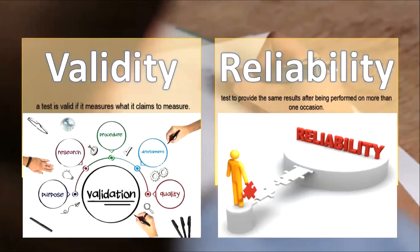In validity, a test is valid if it measures what it claims to measure. For example: What is the research about? What is the purpose? What is the procedure? What is the development and quality of your research? That is the validation or validity of your research or test. In reliability, a test must provide the same results after being performed on more than one occasion — there is repeatability and consistency with the results.